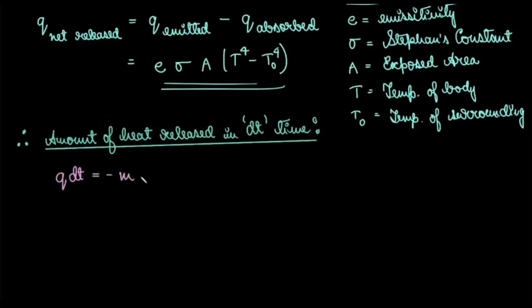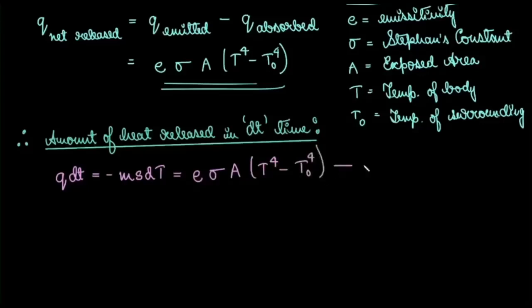From calorimetry, the heat released or absorbed is always equal to the specific heat capacity of the system times its mass times its change in temperature. Here, that is the falling temperature. M times S — mass and specific heat capacity — gives the heat capacity of the system, which is the amount of heat required to change the temperature by one unit. I also add a minus sign because dT (small change in temperature) is negative since a falling temperature is occurring — the new temperature is less than the initial temperature. So this gives minus M·S·dT, and equating it to Q·dt, we get equation 1: e·σ·A·(T⁴ - T₀⁴) = -M·S·dT/dt.